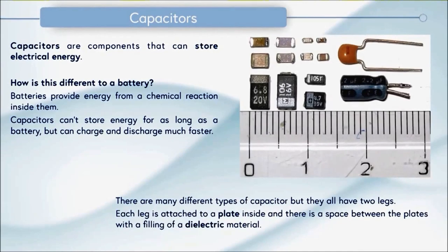Each leg is then attached to a plate inside the capacitor and there's a space between these plates with a filling of a dielectric material. This is reflected in the circuit symbol for a capacitor which shows these two parallel plates with a gap between them. You may also see capacitor circuit symbols which look like this where one of the plates is curved. This means it's a polarised capacitor which means it has a positive side and a negative side and has to be connected the correct way around in a circuit for it to function correctly.